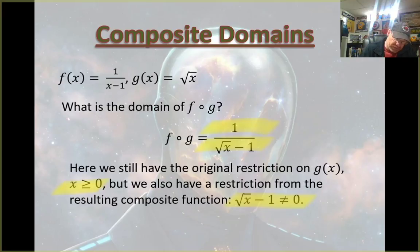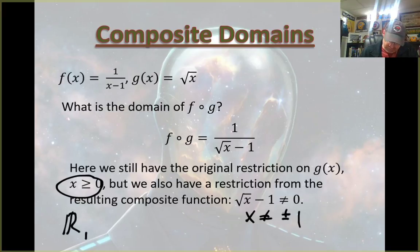And that results in—that means x cannot equal plus or minus one. Well, x can already not equal negative one; x has to be greater than zero. So our result would be all reals such that x is greater than or equal to zero and x cannot equal one.